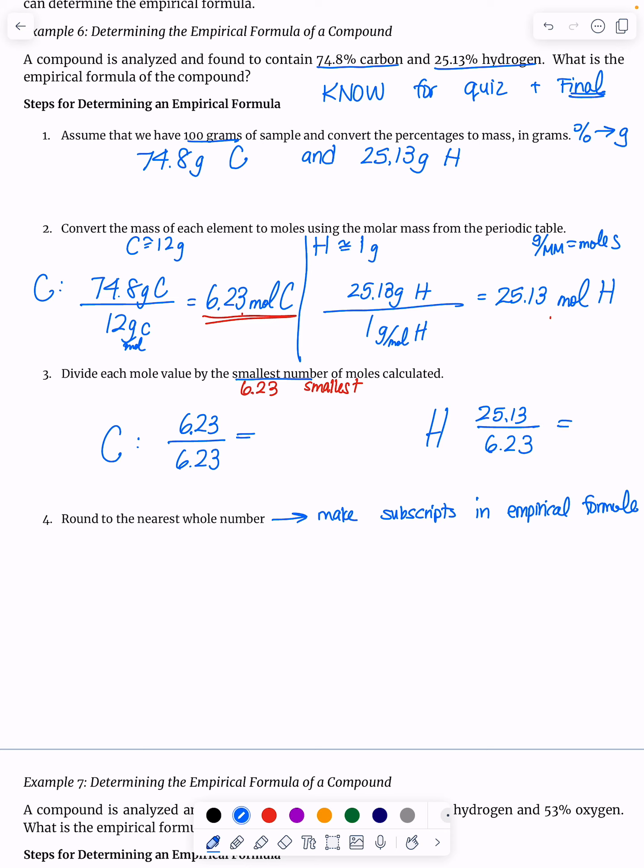And so if I get this, I'm going to get one carbon and 25.13 divided by 6.23 and four hydrogens here. On the calculator, it said 4.033. We could round that to the nearest whole number.